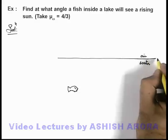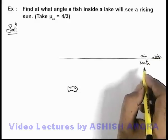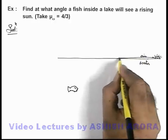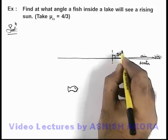If we talk about the rising sun it must be along the horizon, and the light rays which are coming from the rising sun will incident on the lake in grazing manner at an angle of incidence 90 degree.